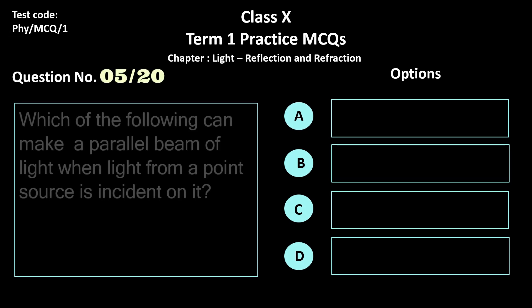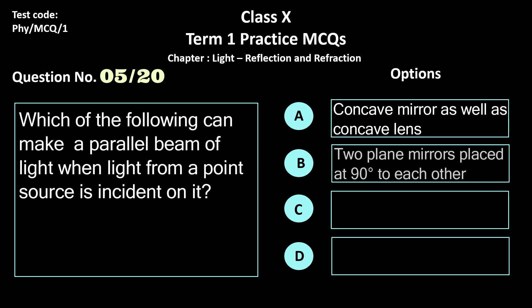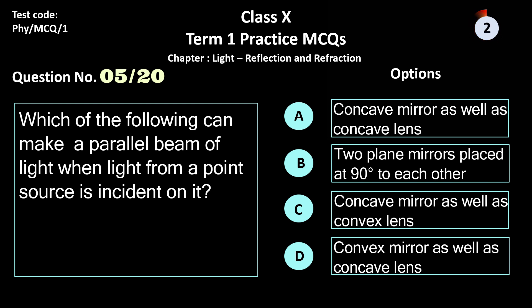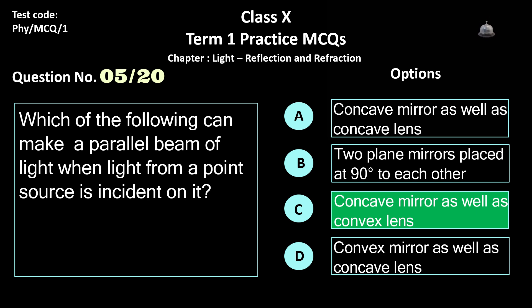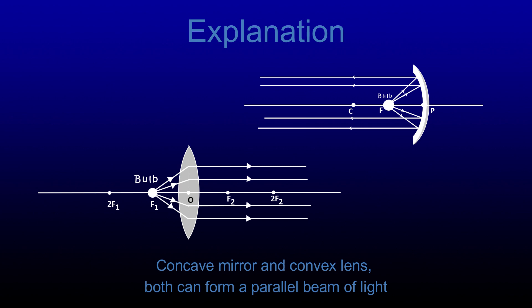Question 5. Which of the following can make a parallel beam of light when light from a point source is incident on it? Options: a) concave mirror as well as concave lens, b) two plane mirrors placed at 90 degrees to each other, c) concave mirror as well as convex lens, and d) convex mirror as well as concave lens. The correct answer is option c. When a point source is placed at the focus of a concave mirror or convex lens, a parallel light beam is obtained.